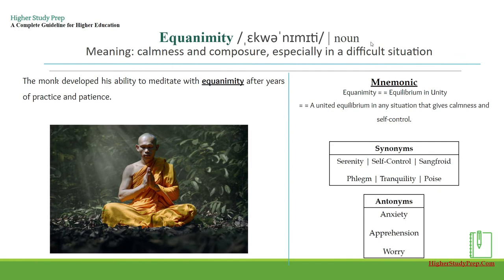Equanimity — it's a noun which means calmness and composure, especially in a difficult situation. For example, the monk developed his ability to meditate with equanimity after years of practice and patience. The mnemonic for remembering the word equanimity can be 'equilibrium in unity,' which means a united equilibrium in any situation that gives calmness and self-control. Some synonyms can be serenity, self-control, sangfroid, phlegm, tranquility, or poise. Some antonyms can be anxiety, apprehension, or worry.